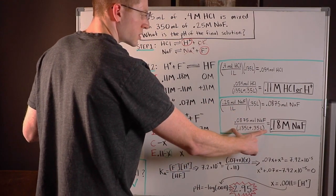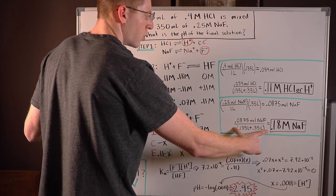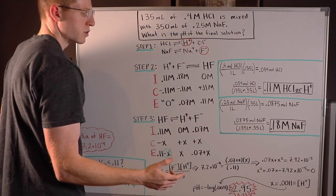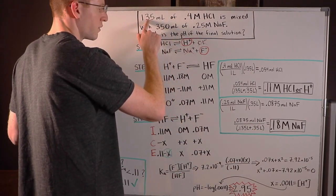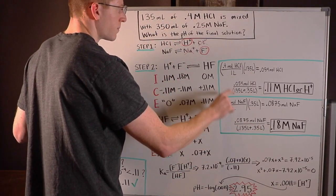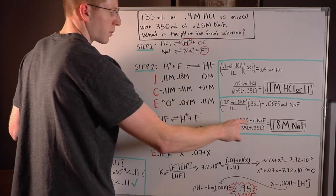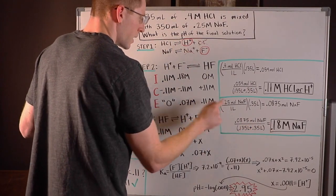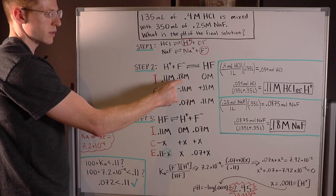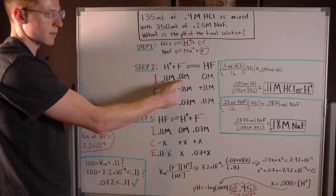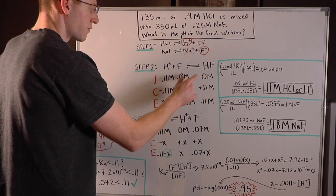And then I divided the moles of NaF by the actual total liter amount of our mixed solution, which was 135 milliliters or 0.135 liters plus 350 milliliters or 0.35 liters. And I got 0.18 molar. So now I had my initial amounts here in molarity. I'm assuming I started out with zero molar HF.